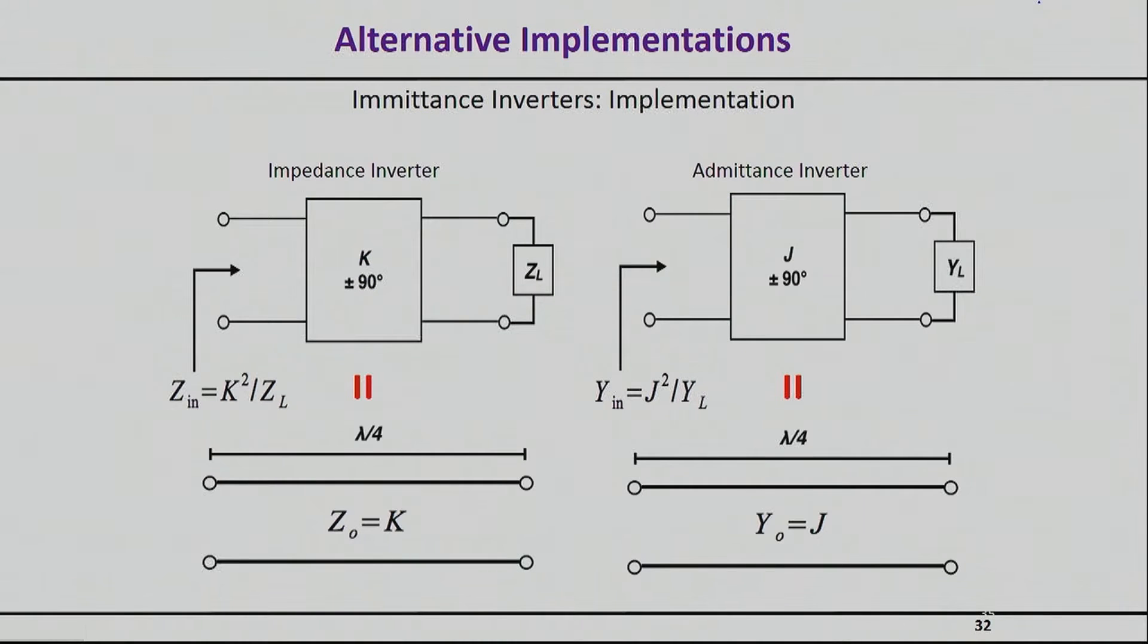So here is a potential realization. So just a quarter wavelength transmission line, whose characteristic impedance is simply K, or characteristic admittance is simply J, does exactly what the equation says here. And this is something we've proven before. So if you plug in a load here, ZL, you will get K squared divided by ZL.